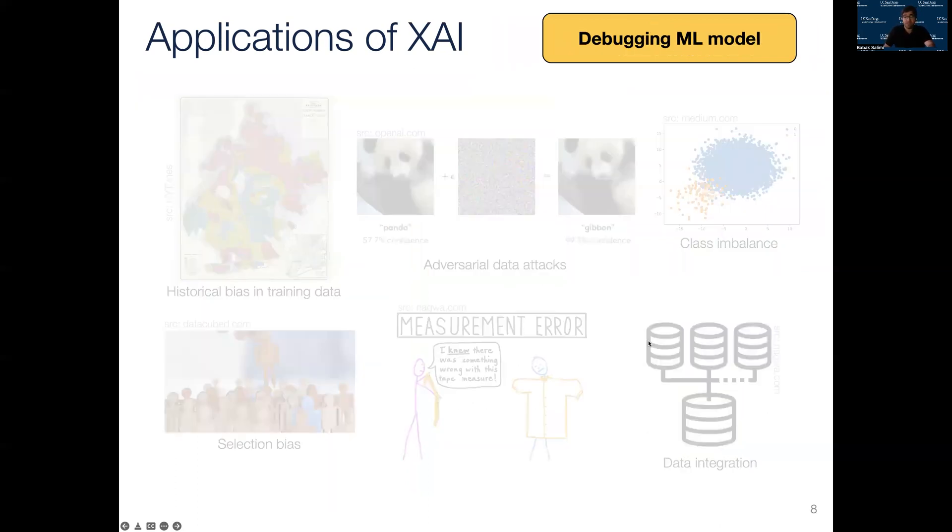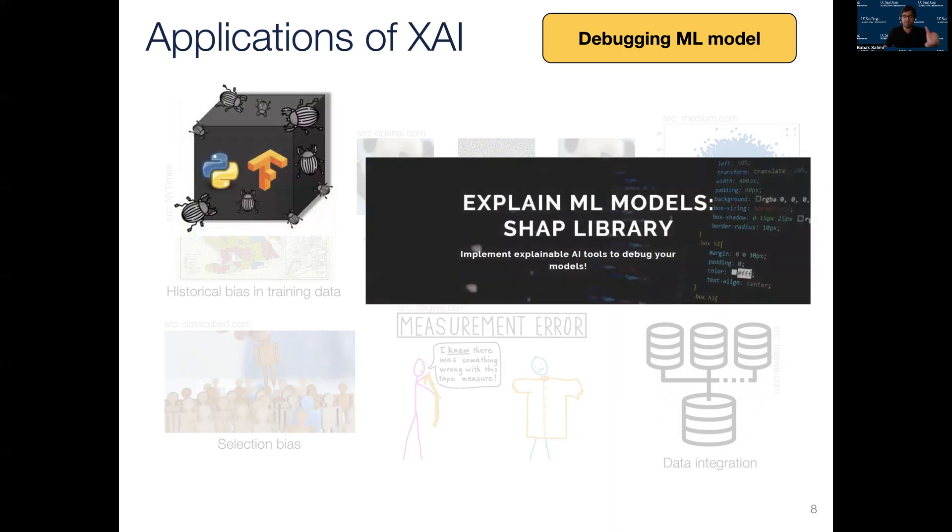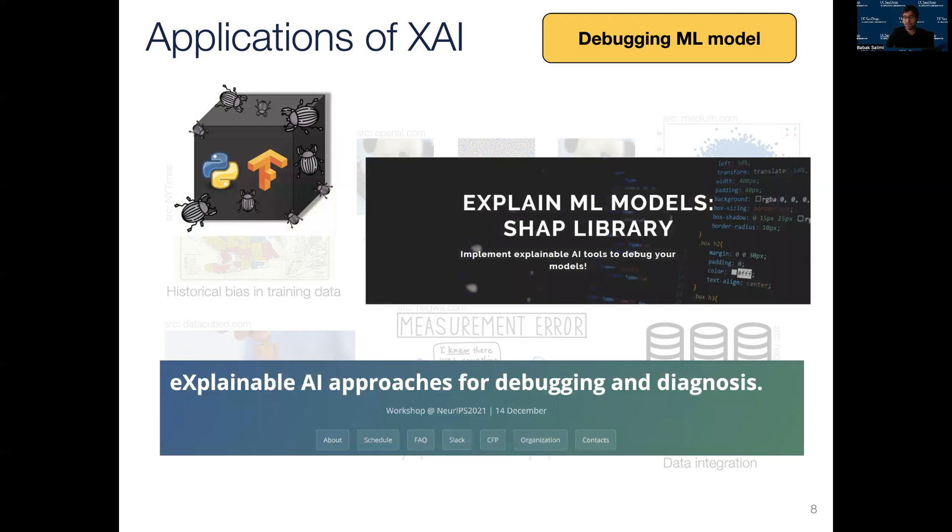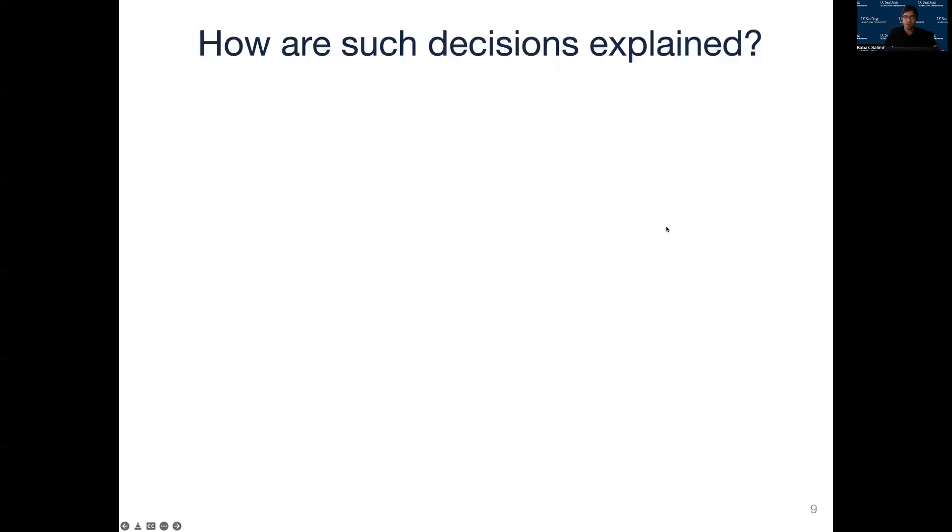And last but not least, explainable AI tools can also help with data validation and debugging ML models that are trained on existing data sets that are often polluted with various sources of data biases. This can be done by means of quantifying the contributions of each feature to the final decision. With the help of it, we can debug our models and observe how it predicted an observation in a certain way. There is actually a NeurIPS workshop now dedicated to this particular topic. Okay, now let's discuss how explainability can be achieved.